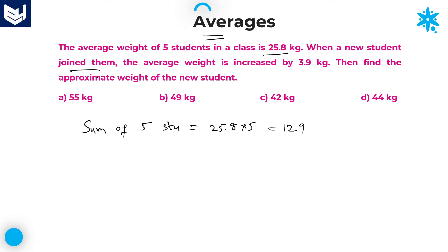When a new student joins them, the average weight is increased by 3.9 kgs. It means that at present sum of 5 students is 129. I don't know the average weight of 6 students. Let us take the weight of 6th student as x. Now the number of students is 6. Here after adding that student, average is increased by 3.9 kgs. Initial average is increased by 3.9 kgs. So the sum of these two: 25.8 plus 3.9 which is equal to 28 plus 0.8 plus 0.9, that is 1.7 kgs, equals 29.7.